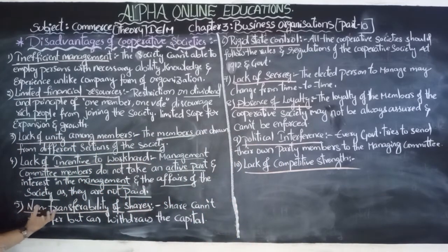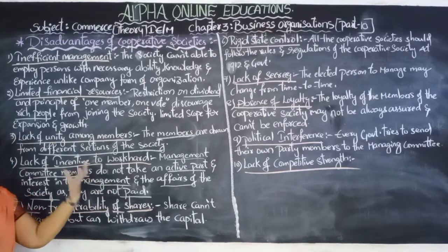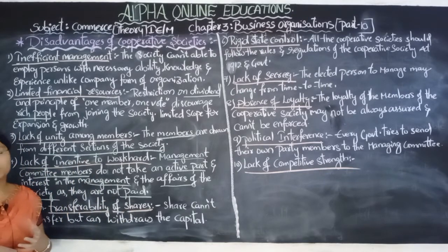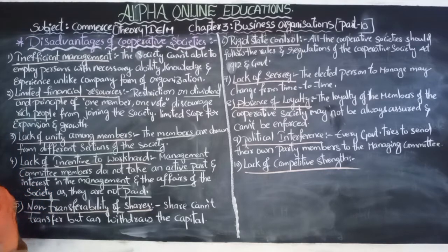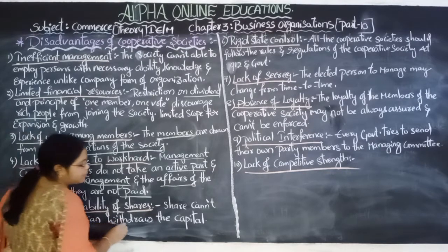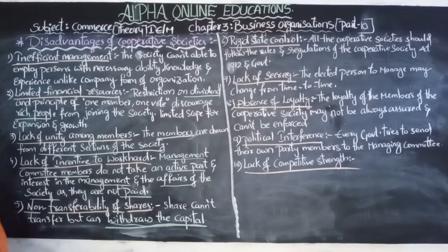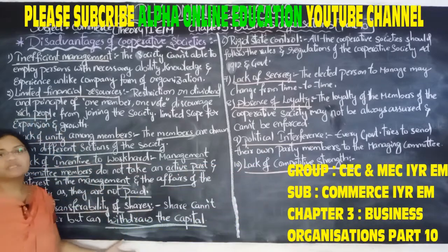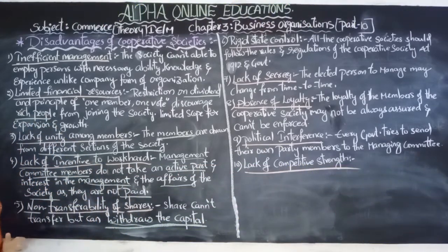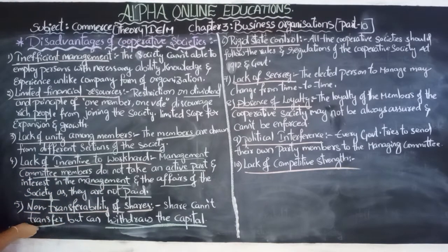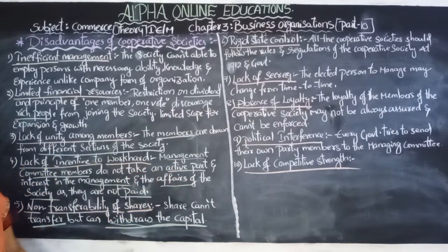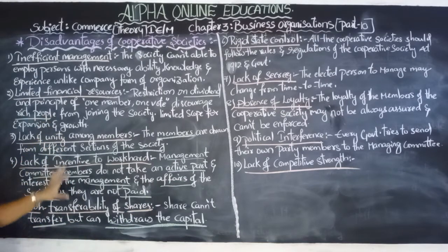The next disadvantage is no transferability of shares. The members of the cooperative society cannot transfer their shares to another person, but they can withdraw the capital they brought when they entered the cooperative society. They cannot transfer shares to another party, but they can withdraw the total amount of capital they originally invested.